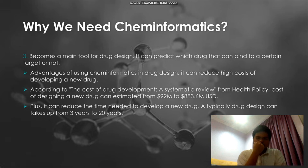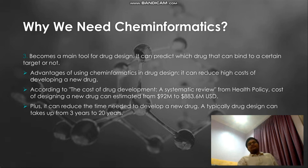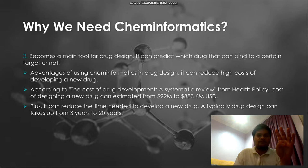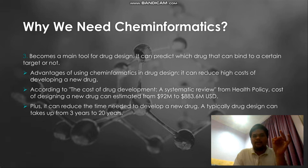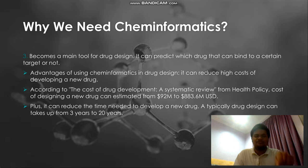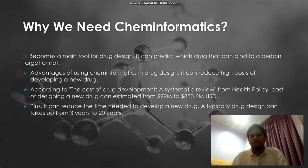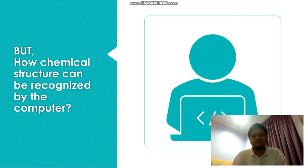Last but not least, cheminformatics has become a main tool for drug design. It can predict which drug can bind to a certain target. We use cheminformatics in drug design because it can reduce the high cost of developing a new drug. According to a systematic review, the estimated cost of designing a new drug ranges from $92 million to $883.6 million USD. It can also reduce the time needed, as a drug design typically takes from 3 to 20 years.